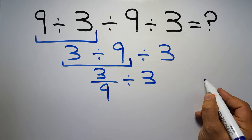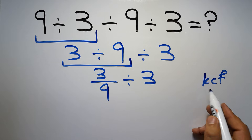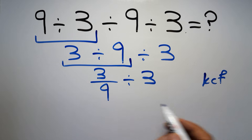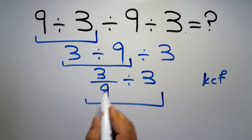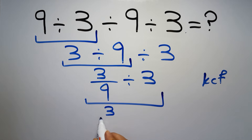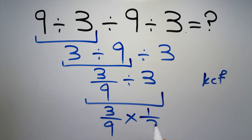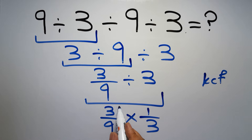Now, according to the KCF rule — K stands for Keep, C stands for Change, and F stands for Flip — we keep the first fraction, change division to multiplication, and flip the second fraction. So we have 3 over 9 times 1 over 3. We can cancel the 3s, leaving us with 1 over 9.